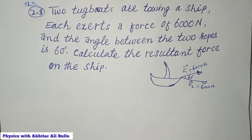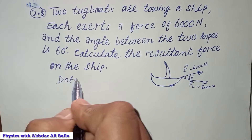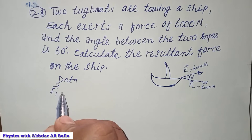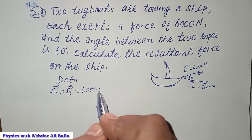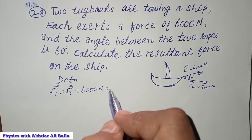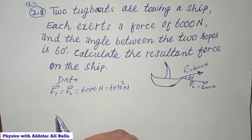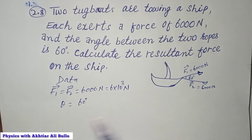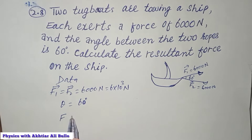First, we write the given data: the forces are equal, so F1 equals F2 equals 6000 Newtons, which we can also write as 6 × 10³ Newtons. The angle between the ropes is 60 degrees. We need to find the resultant force F.